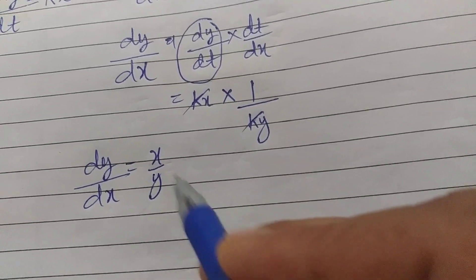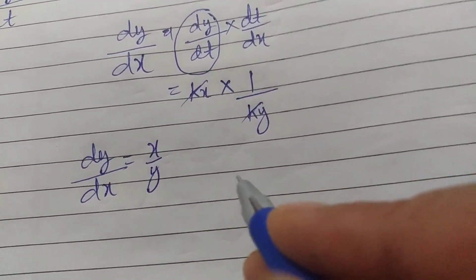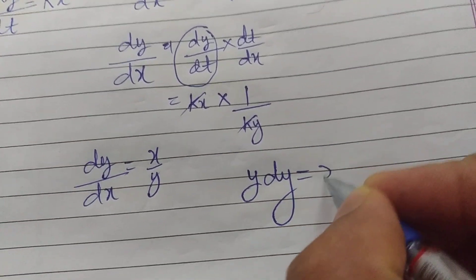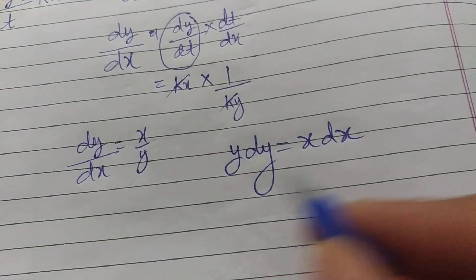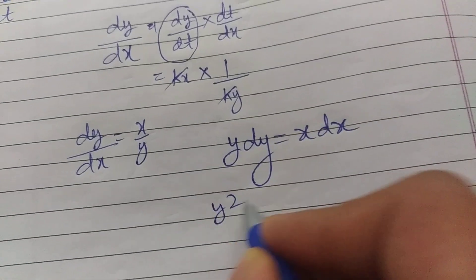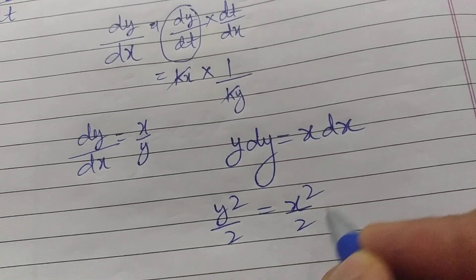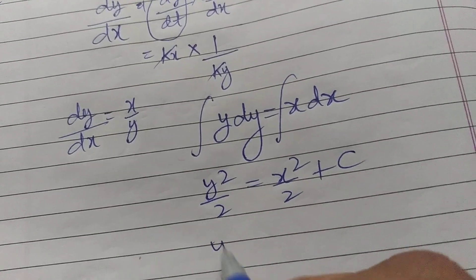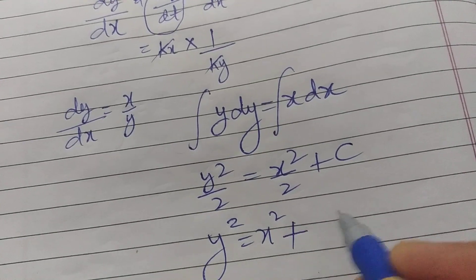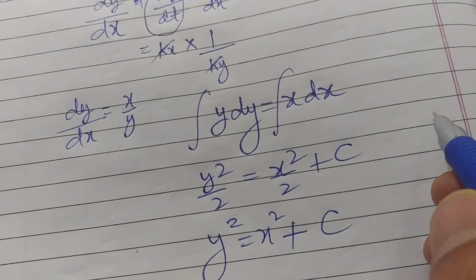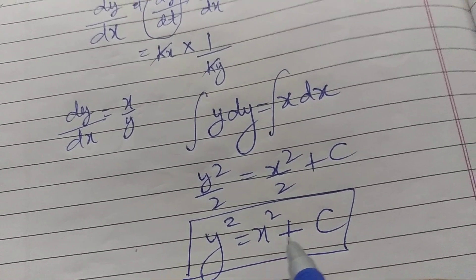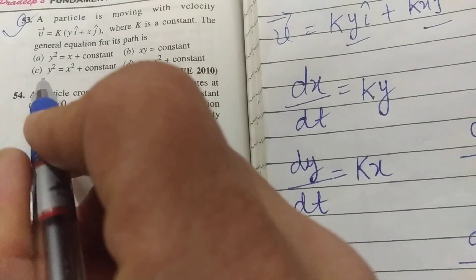From here we will simply do the integration and get the relationship for x and y. We do cross multiplication: y dy equals x dx. Then we integrate both sides. We get y squared by 2 equals x squared by 2 plus some constant. It's an indefinite integral. So y square equals x square plus constant. The equation for the path is y squared equals x squared plus c.